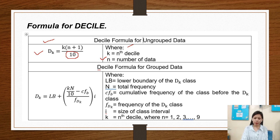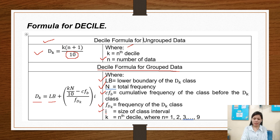We have here the decile formula for grouped data. D sub K is equal to the lower boundary plus (K times N over 10 minus cumulative frequency before) over the frequency of the decile class, times the class interval. Where LB is the lower boundary of the D sub K class, N is the total frequency, CFB is the cumulative frequency of the class before the D sub K class, F sub D sub K is the frequency of the decile class, I is the size of the class interval, and K is the decile number from 1 to 9 depending on what is asked.